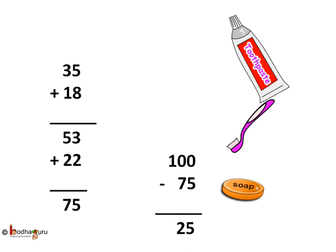Let's first add how much we spent. So 35 plus 18 is equal to 53, and 53 plus 22 rupees for soap which is equal to 75. So total 75 rupees is spent. 100 minus 75 means 25 rupees is left.